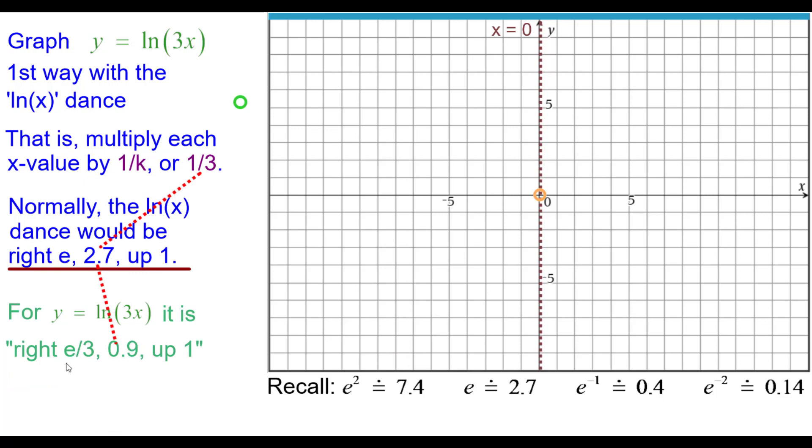So what we're going to do is we're going to go right e over 3 up 1 because it's one third of the e for the x and the y values remains unchanged. So right 0.9 up 1. The next step would be right e squared up 2. We have to take a third of that x coordinate which is about 2.5 up 2. e to the 0 is 1 up 0 but again we have to take a third of that so it's going to be right a third up 0.